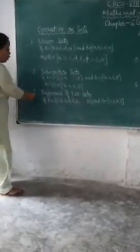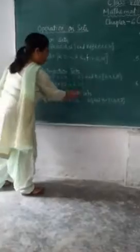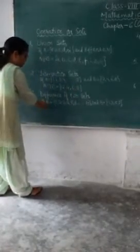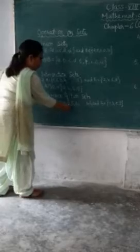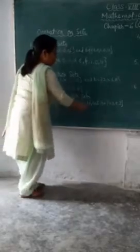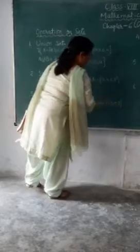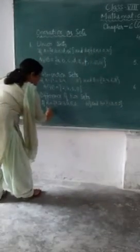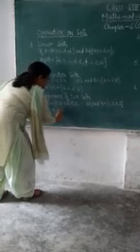The third operation of sets is the difference of two sets. If we are given set A equal to 1, 2, 3, 4, 5, 6 up to 10, and set B equal to 1, 3, 5 and 7 only, then the difference A minus B is the set in which only the elements which belong to A and do not belong to B are included.